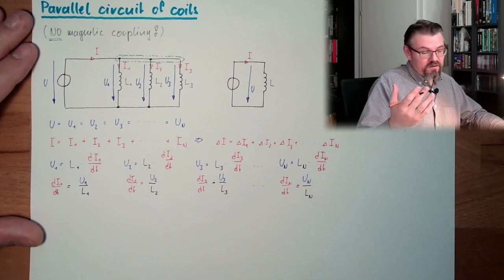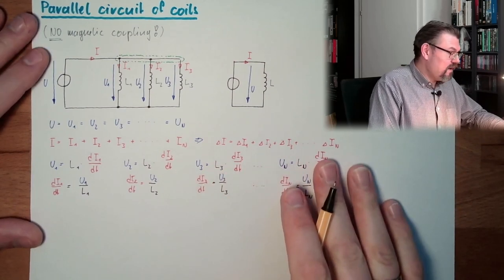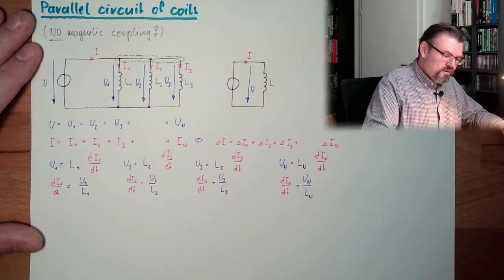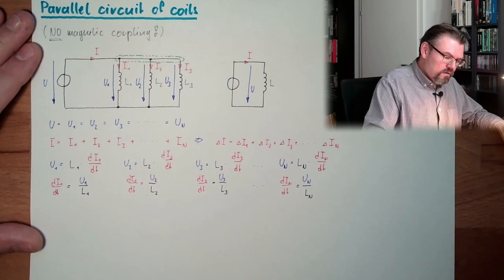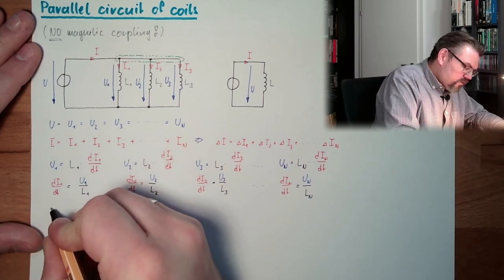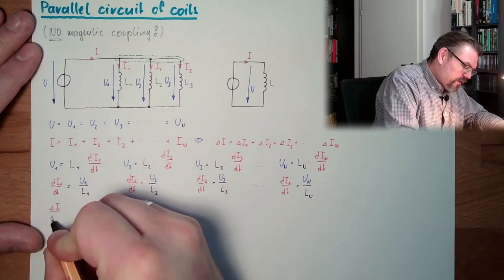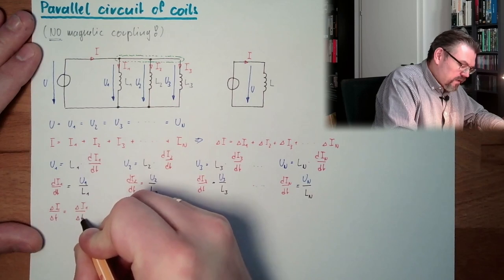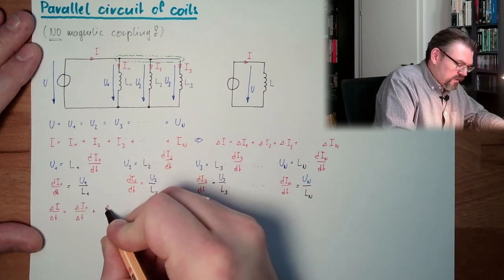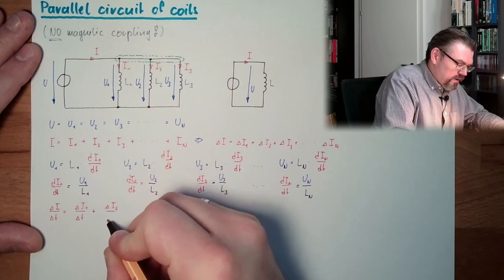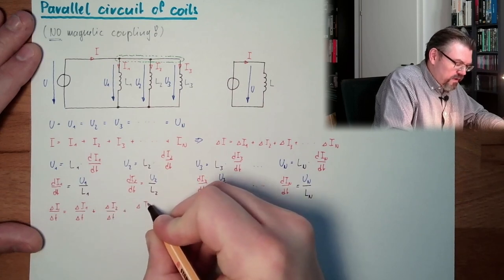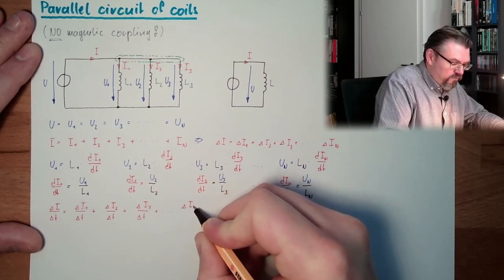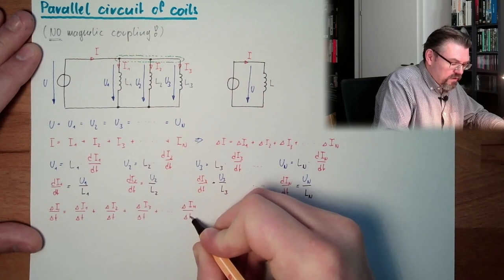And if I do this by taking into account the infinitesimal difference, then I can write, I divide this whole stuff to delta I divided by delta t equals delta I1 divided by delta t plus delta I2 divided by delta t plus delta I3 divided by delta t plus, and so on, delta IN divided by delta t.